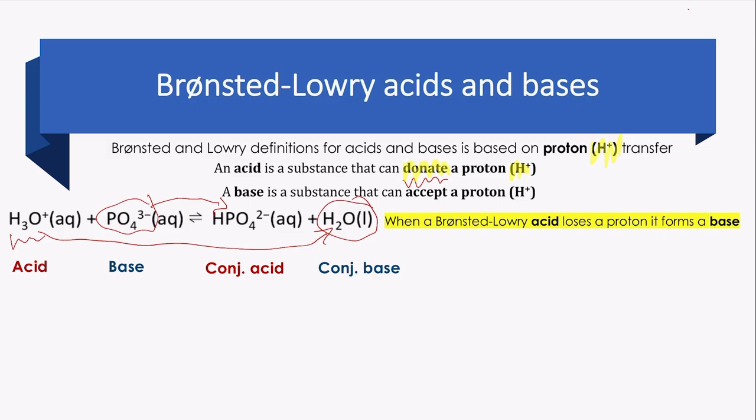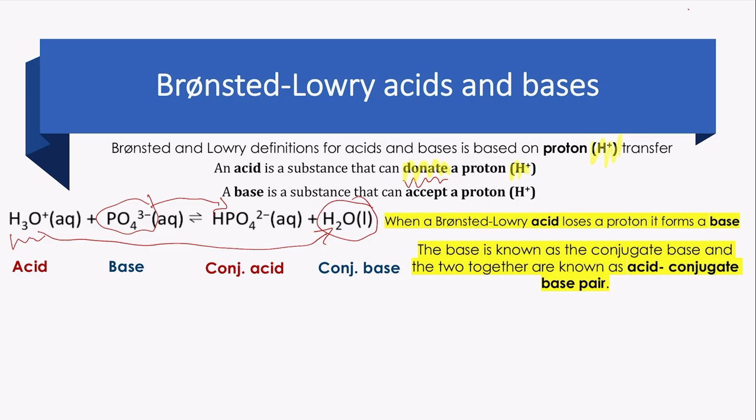So it's very important to highlight this point. When a Brønsted-Lowry acid loses a proton, it forms a base. This base is known as conjugate base, and the two together are known as acid-conjugate base pair.